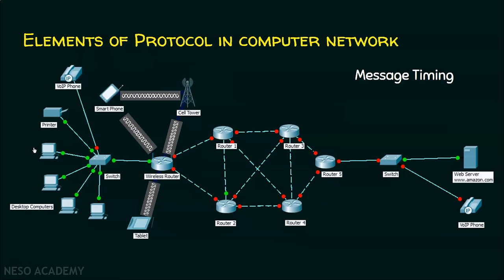At the same time, after sending the data, the sender will wait for a certain period of time to receive an acknowledgement. This acknowledgement is necessary because the sender must ensure that the data is received by the destination. If the acknowledgement is not received on time, the sender understands there was some loss and starts retransmitting that packet again. This flow control and acknowledgement timing are maintained by protocols in the form of message timing.